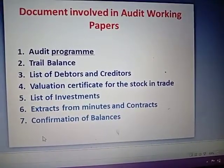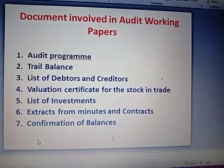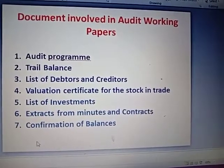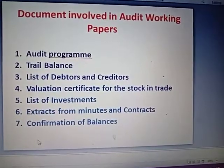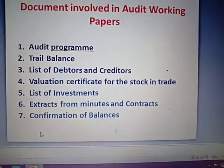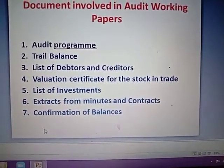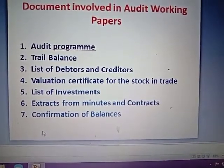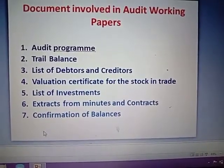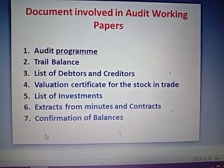We are going to include purchase, manufacture, and work in progress. We are going to compare all the stock and closing stock. If you want to make a certificate in the working paper, you can do it. If you want to make a list of investments, you can do it for all institutions — shares, mutual funds, and insurance.